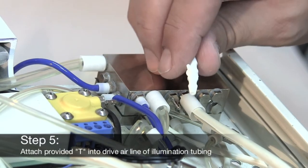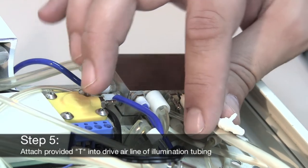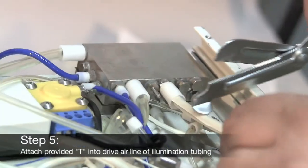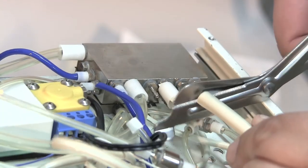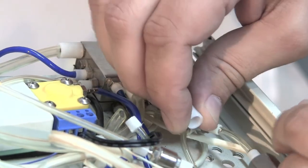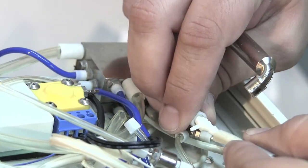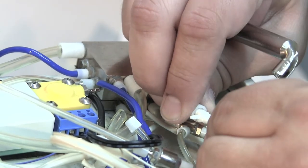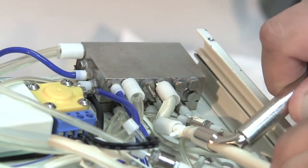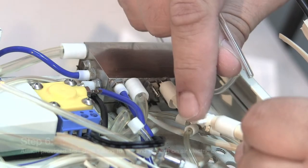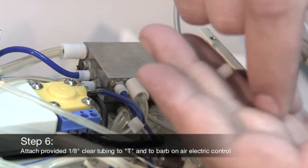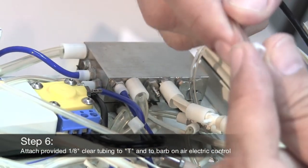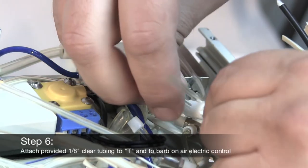Next we're going to splice the provided T into the drive air line of the illumination tubing. Attach one end of the provided eighth inch clear tubing to the T and the other to the barb on the air electric control.